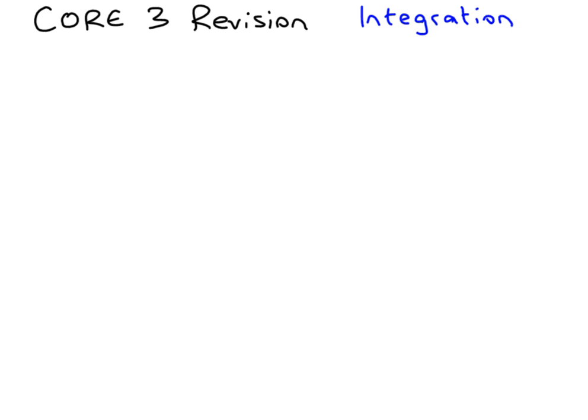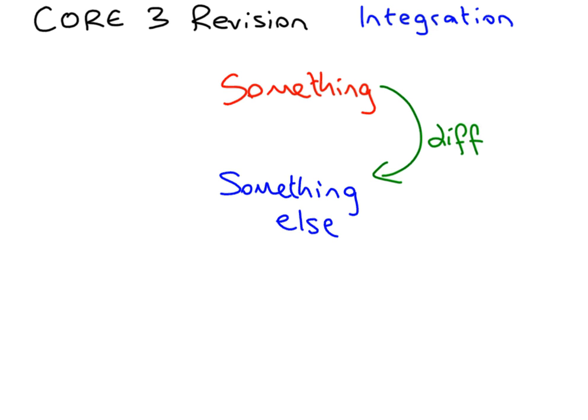We're going to learn how to integrate the tricky things that they can give you, whether it might be one over something or it might be a bracket to a certain power. Now, the key thing that you need to remember is if you've got something, if you differentiate, then you're going to get something else. Now, if you know this, you know how to integrate this something else, because integration is the opposite of differentiation.